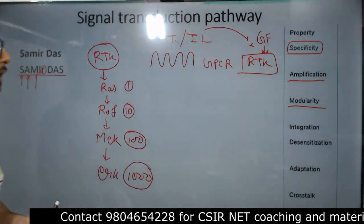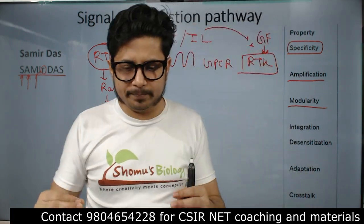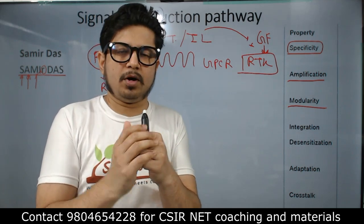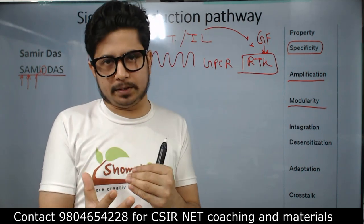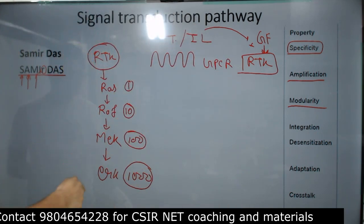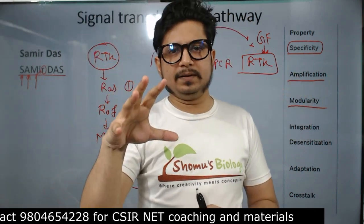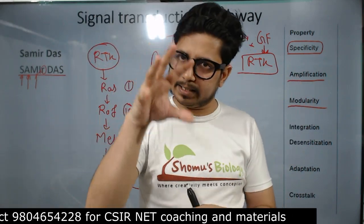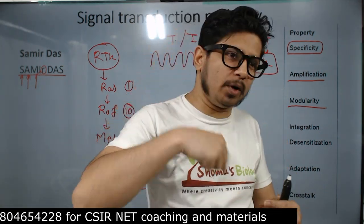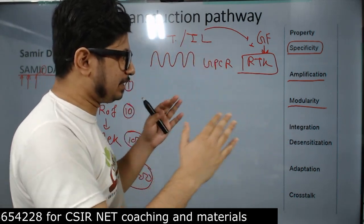Then M — M for modularity. Modularity means specific modification of proteins and fixed interactions between them. For example, in the RTK pathway the interaction pattern is fixed; in the GPCR pathway the G protein alpha unit separates from the beta-gamma subunit, gets activated, then further activates adenylyl cyclase. The structural integrity of proteins interacting with other proteins is fixed — that is modularity.